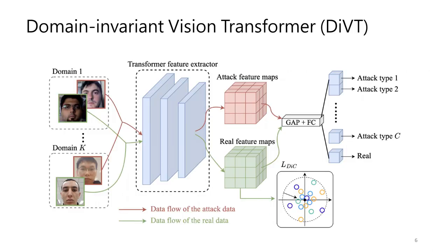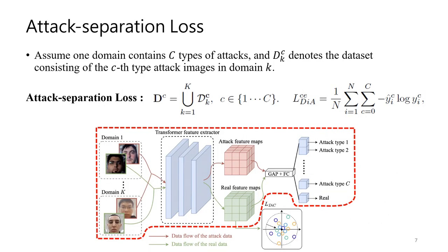This page shows the concept of our proposed domain invariant vision transformer, DIVT. We design two loss terms to constrain the distribution of latent features for input faces. The first loss is domain invariant attack separation loss. We apply the cross-entropy classification loss to classify the images into the categories of real faces and different attack types. It separates different attack types and real faces from each other and forces the model to learn a domain-insensitive latent space.